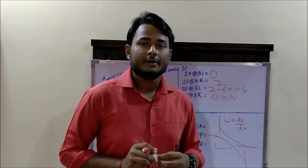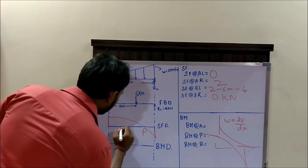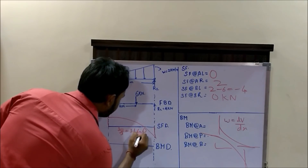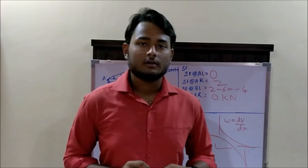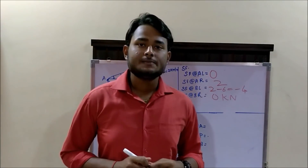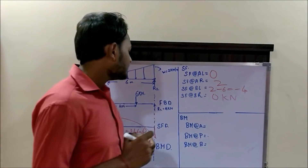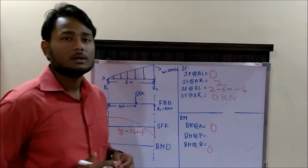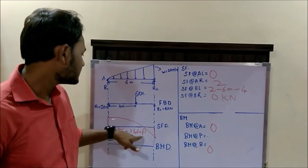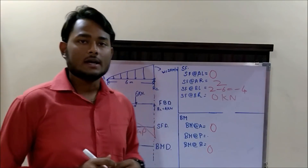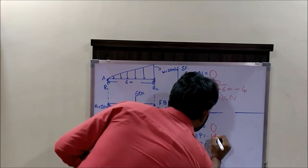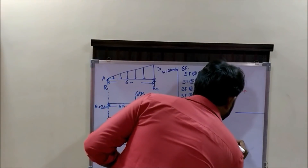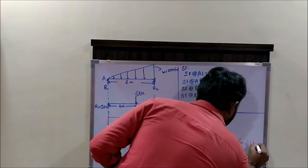The point at which the shear force becomes 0 is at a distance of L/√3 from point A, which turns out to be 3.46 meters. This distance is fixed. Now, we draw the bending moment diagram. The bending moment at the end points is always 0, while the bending moment is maximum at the point where the shear force becomes 0. There is a formula to calculate the maximum bending moment: WL²/(9√3). After substituting all the values, this turns out to be 4.61 kN·m.